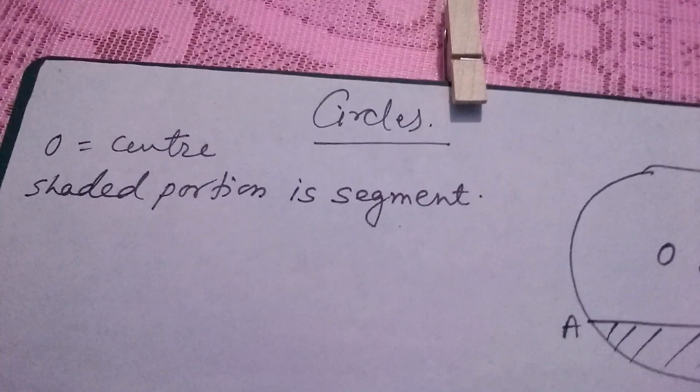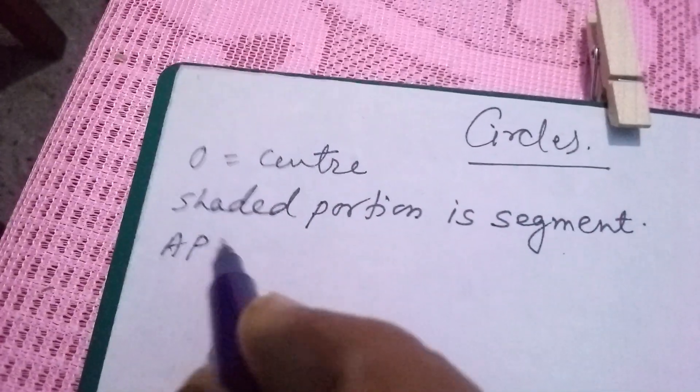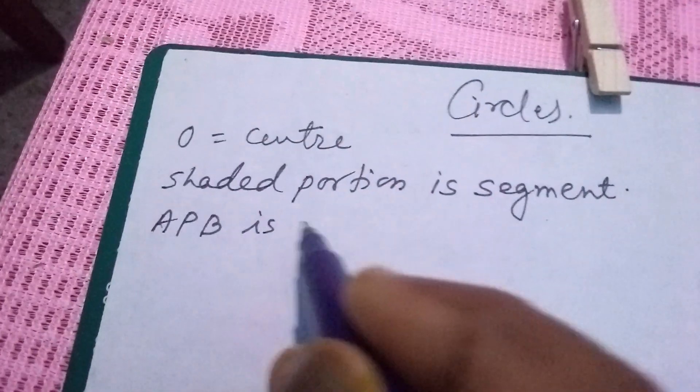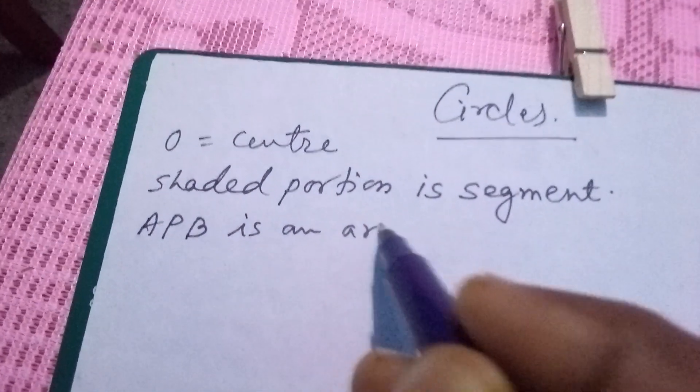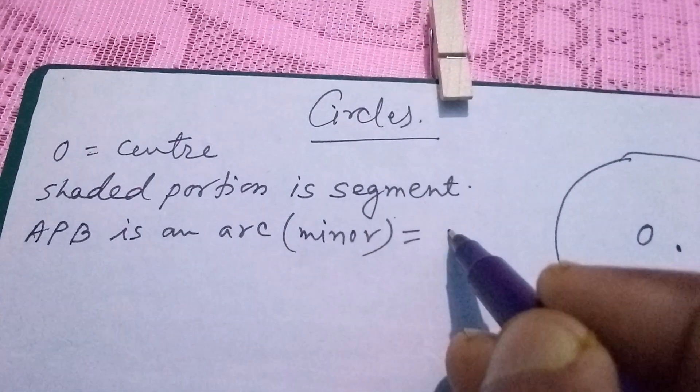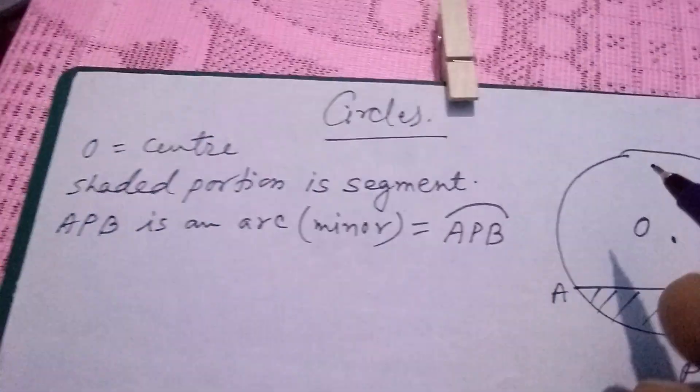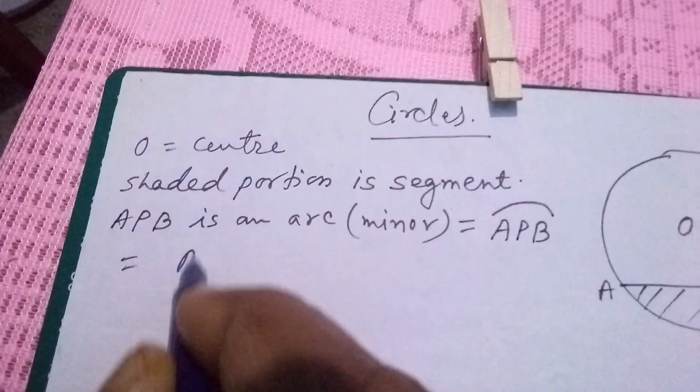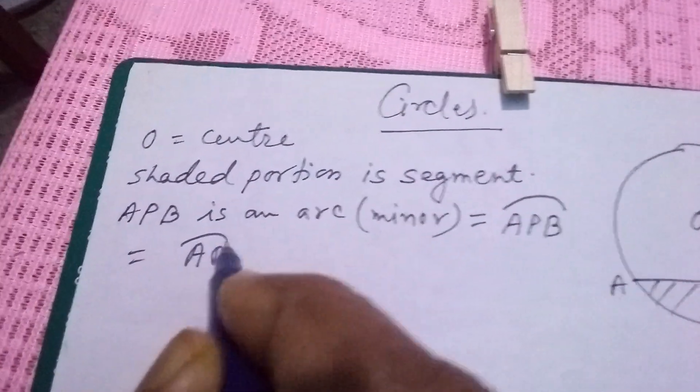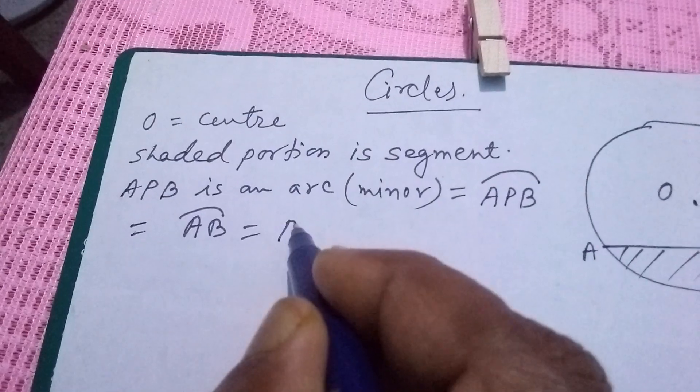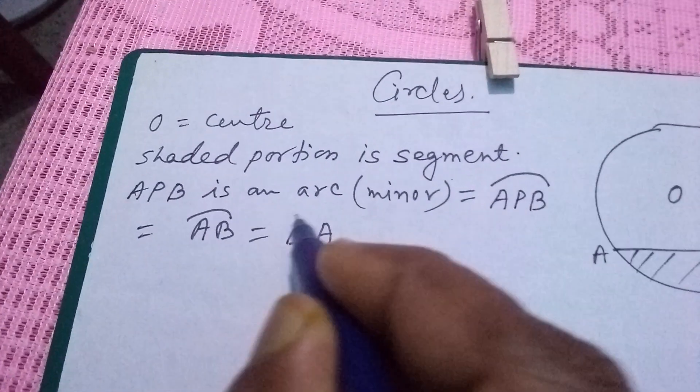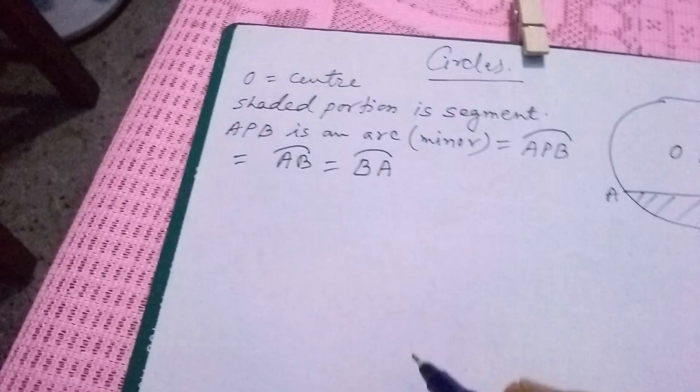Okay, and APB is an arc. APB is an arc, that is minor. This is also written as APB like this or simply you can write AB. This is equal to BA. Both are same.